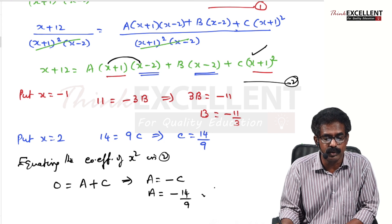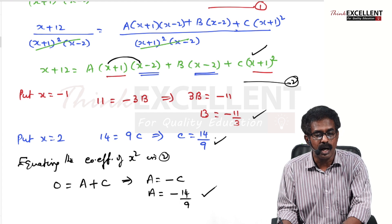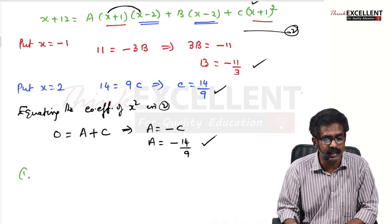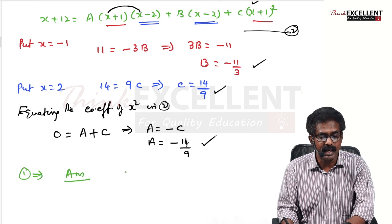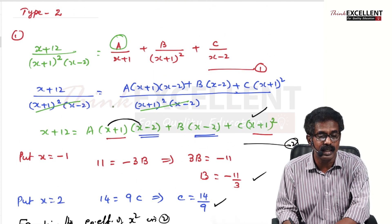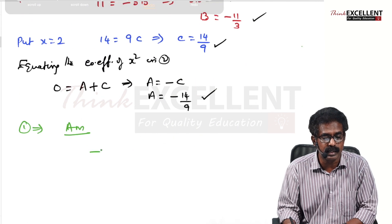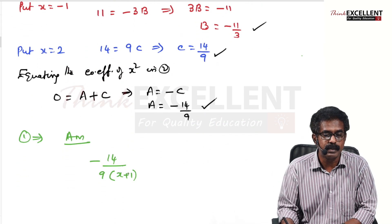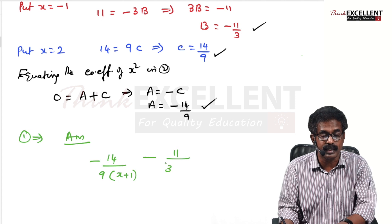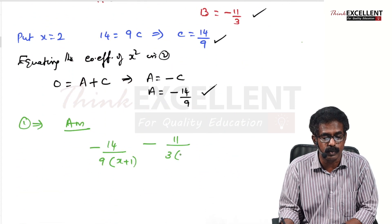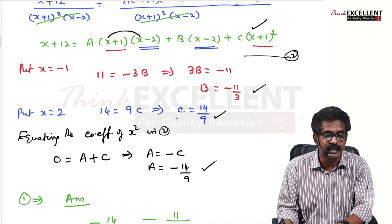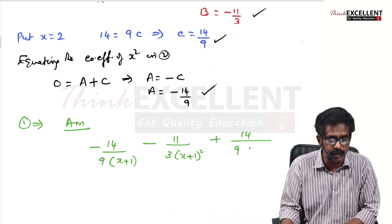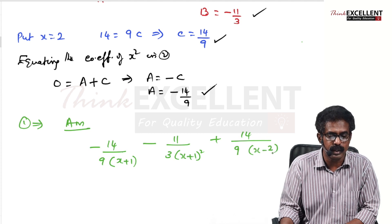Now substitute all three values into equation 1. A = −14/9, so the first term is −14/9 divided by (x + 1). B = −11/3, so the second term is −11/3 divided by (x + 1)². C = 14/9, so the third term is 14/9 divided by (x − 2). This is the final answer.